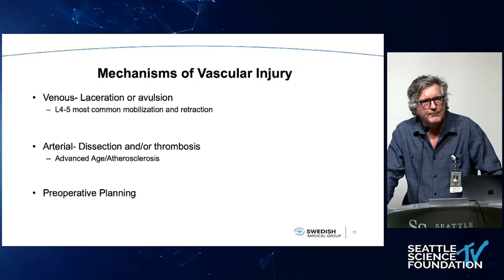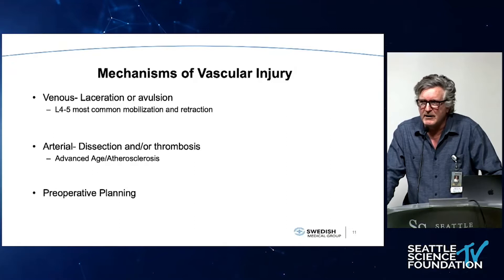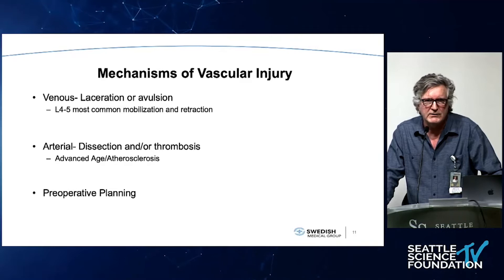One thing I do if we're going to do fairly extensive retraction of the artery in a three- or four-level case is put a pulse ox on the left foot. It's a very accurate means of measuring if there's an injury. We put a pulse ox on the hallux, determine the baseline pre-op, and when you're finished, you put it back on. If it's dropped, 100% of the time you've got an injury. We will often put it on before we close, especially in patients where we suspect there may be an injury.